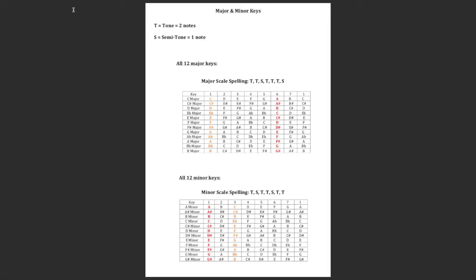A musical key is a group of notes that work well together. There are major and minor keys - multiple different groups of notes - and they each contain an arrangement of seven notes instead of all 12. So a key is a group of seven notes out of the 12 that you have to choose from, and those seven notes are what give you music that sounds good.